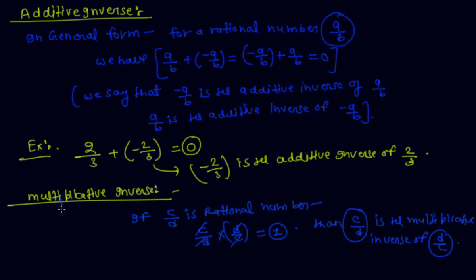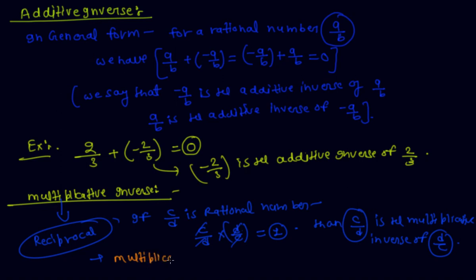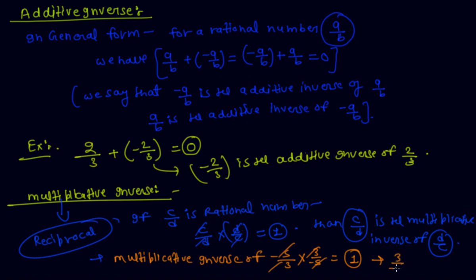Multiplicative inverse is also called reciprocal. For example, if you want to find the multiplicative inverse of minus 5 by 3: if I multiply minus 5 by 3 with minus 3 by 5, the answer is 1. So we can say that minus 3 by 5 is the multiplicative inverse or reciprocal of minus 5 by 3.